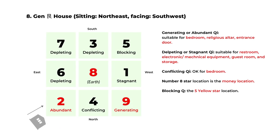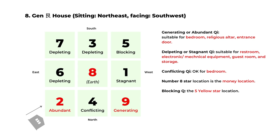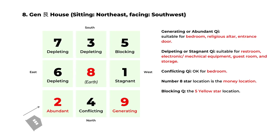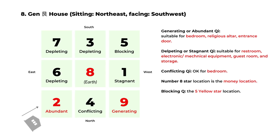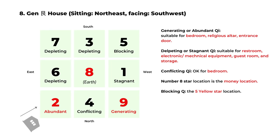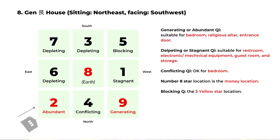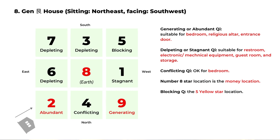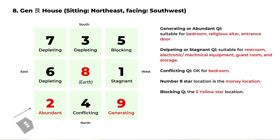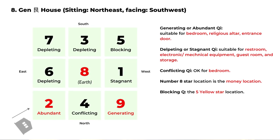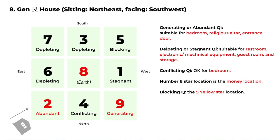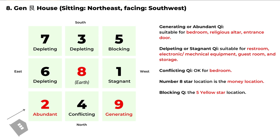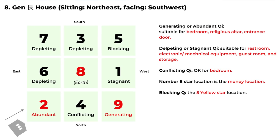The next one is the Gen house — a house sitting on the northeast and facing southwest. The number eight goes to the center, the earth element. The generating Qi is in the northwest and the abundant Qi is in the northeast. The number eight money star is in the center, so those are the areas you can focus on when setting up your feng shui.